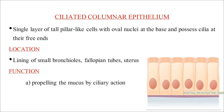Ciliated columnar epithelium is made up of a single layer of tall pillar-like cells with oval-shaped nuclei at the base, possessing cilia at their free end. They are located on the lining of small bronchioles of the lungs and in the female reproductive organs — the fallopian tube and uterus. Their function is to propel mucus by ciliary action.